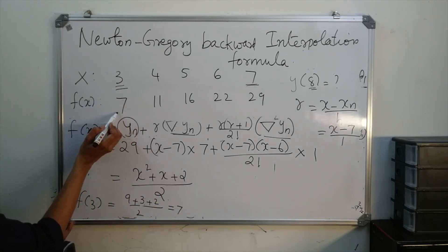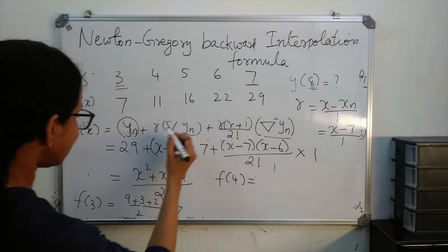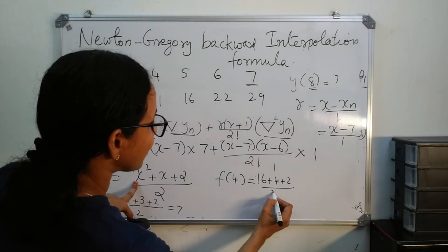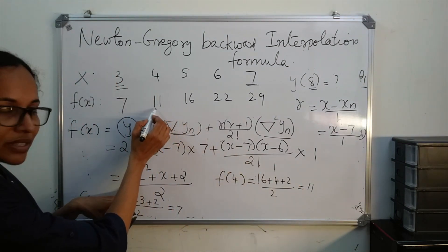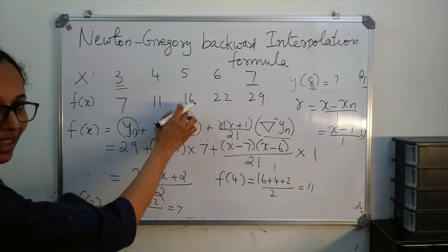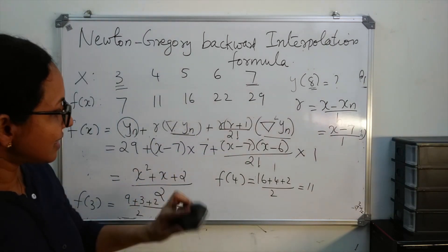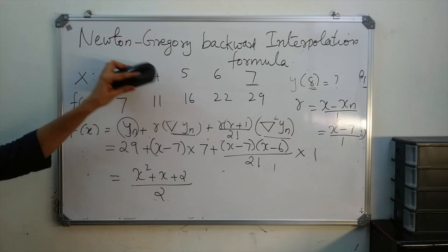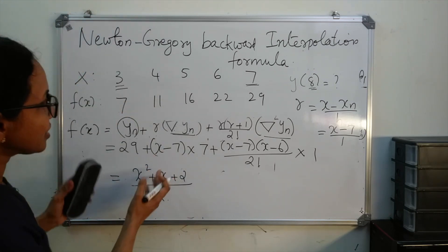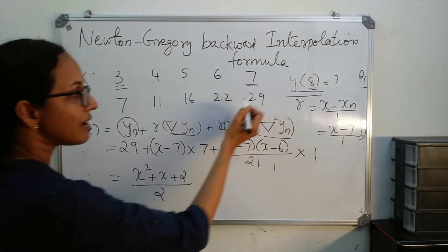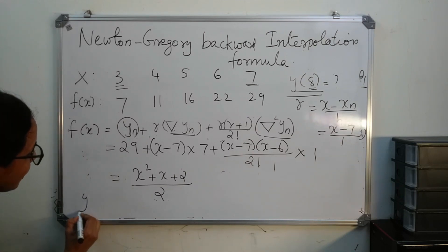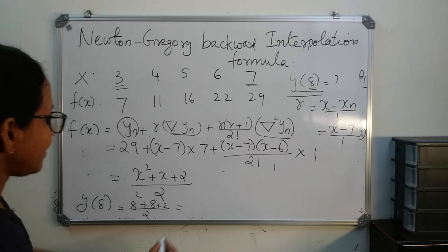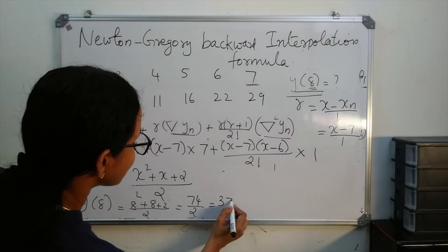Similarly, f(4) = (16 + 4 + 2)/2 = 11, and f(5) also gives 16 — exactly matching the data. So this is a good fit. Using this interpolating polynomial, y(8) = (64 + 8 + 2)/2 = 74/2 = 37. So 37 is the answer.